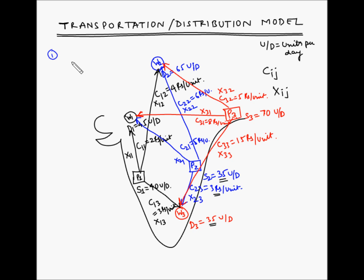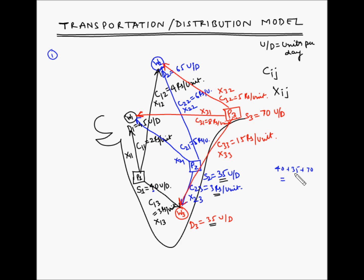The first assumption is that the total quantity of product available at different sources is equal to the total requirement at different destinations. Our sources are P1, P2, and P3. The total quantity available at these sources is: S1 is 40, S2 is 35, and S3 is 70. So the total supply is 40 plus 35 is 75, plus 70 is 145.